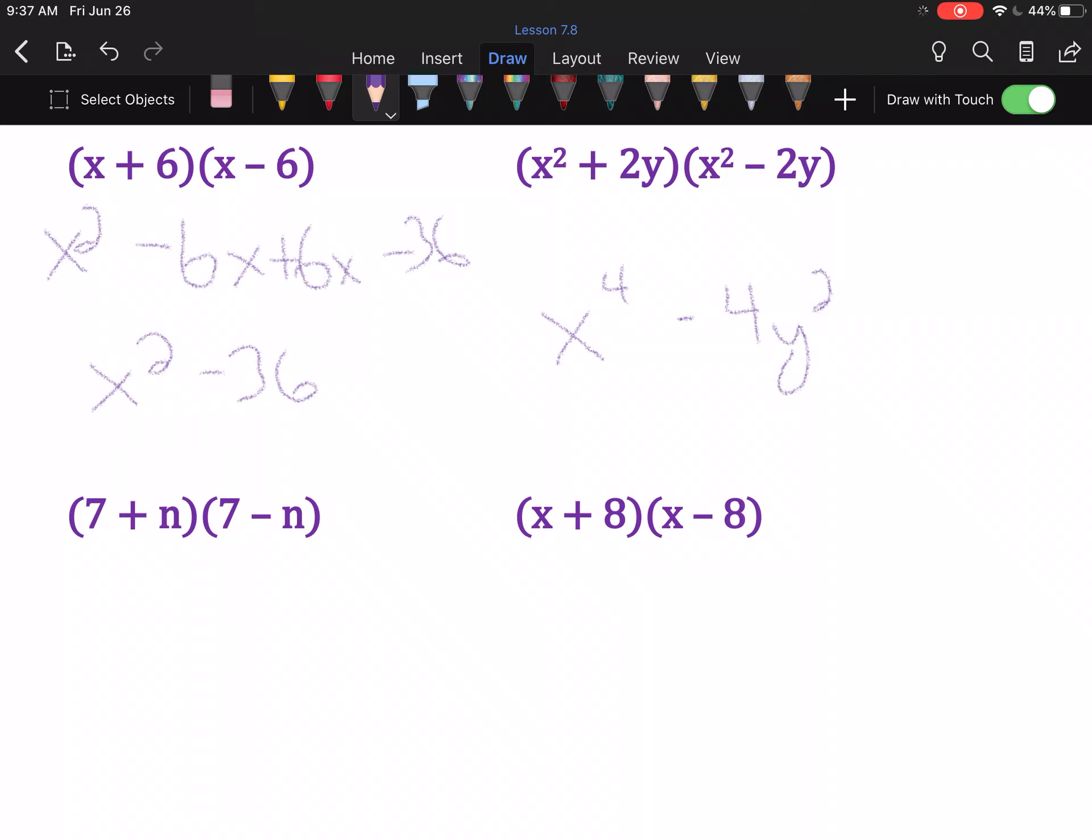So, long as you recognize what this looks like, you can shortcut this. 7 times 7 is 49. Outer and inner will cancel. n times -n is -n².